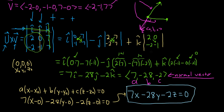So given three points, to find the equation of a plane: find two vectors by subtracting the components, take the cross product to get your normal vector, then pick any point and plug everything into the formula. And you're done.